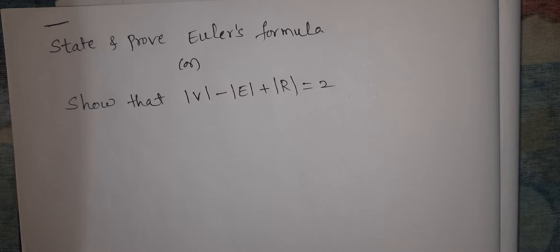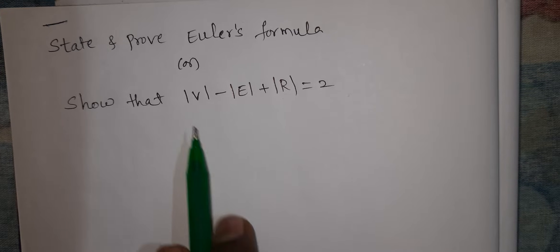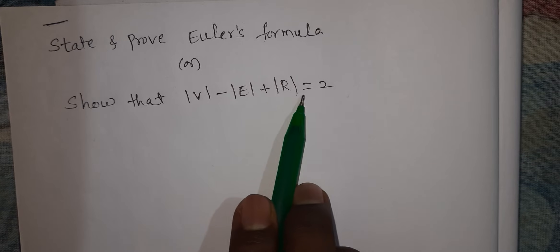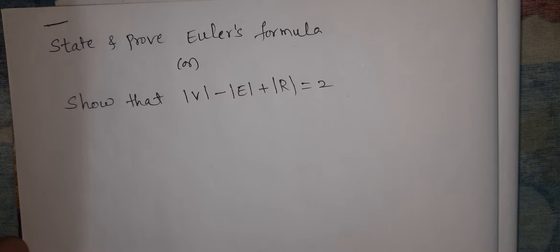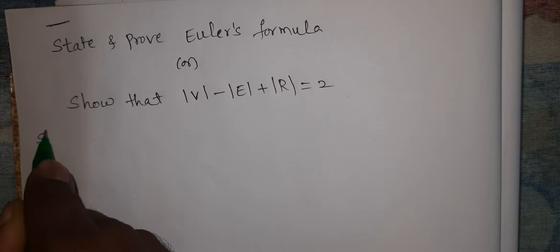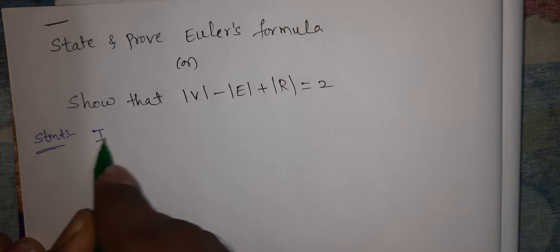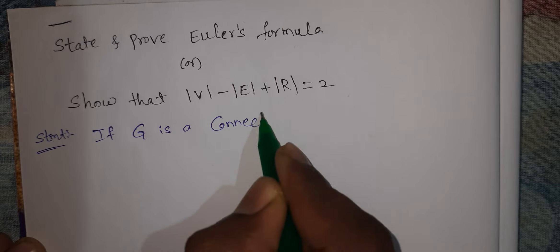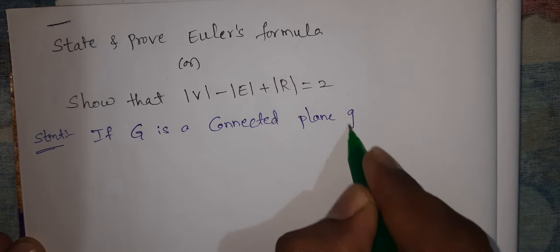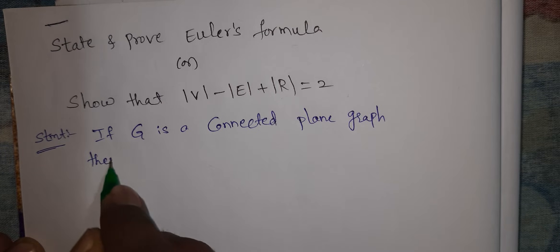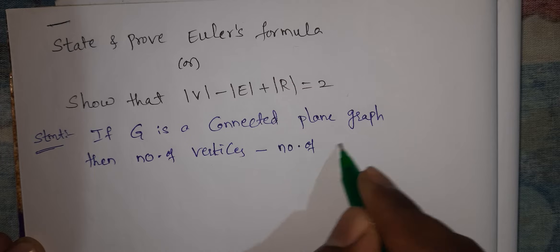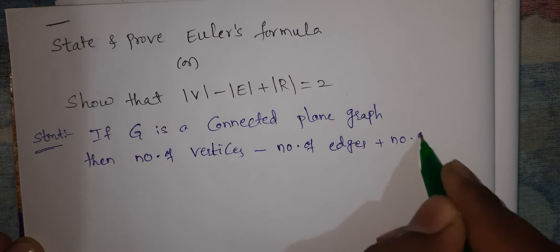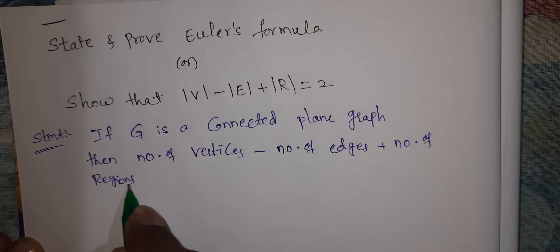What is the theorem? State Euler's formula: V minus E plus R equals 2, where V denotes vertices, E denotes edges, and R denotes regions. This is graph theory.